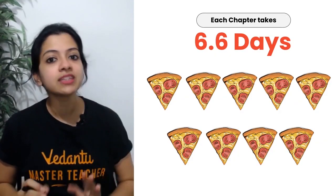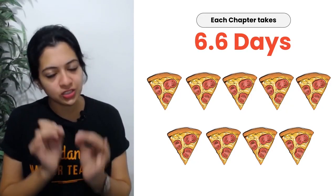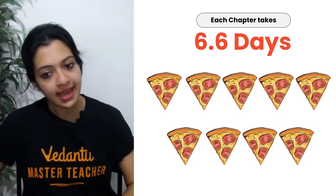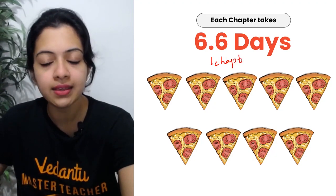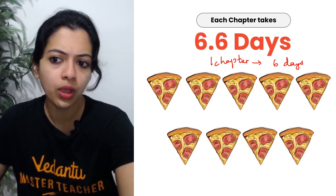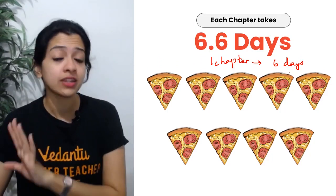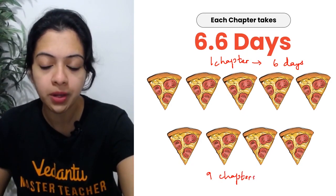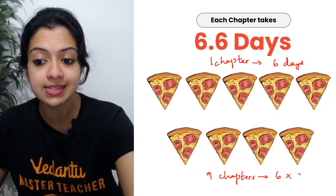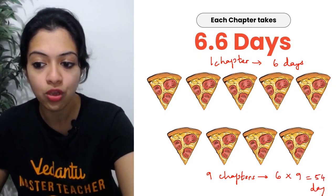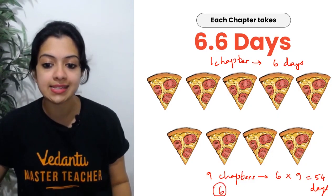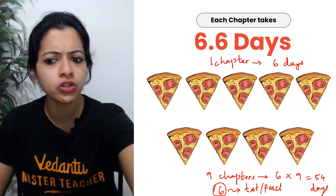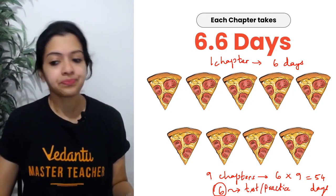As per our 60-day plan with nine chapters: 60 divided by 9 gives you 6.6 days per chapter. Forget the 0.6 — let's aim to complete one chapter in six days. For nine chapters, that's six times nine, which equals 54 days. The remaining six days? Use them only for testing and practice — whatever you need them for.